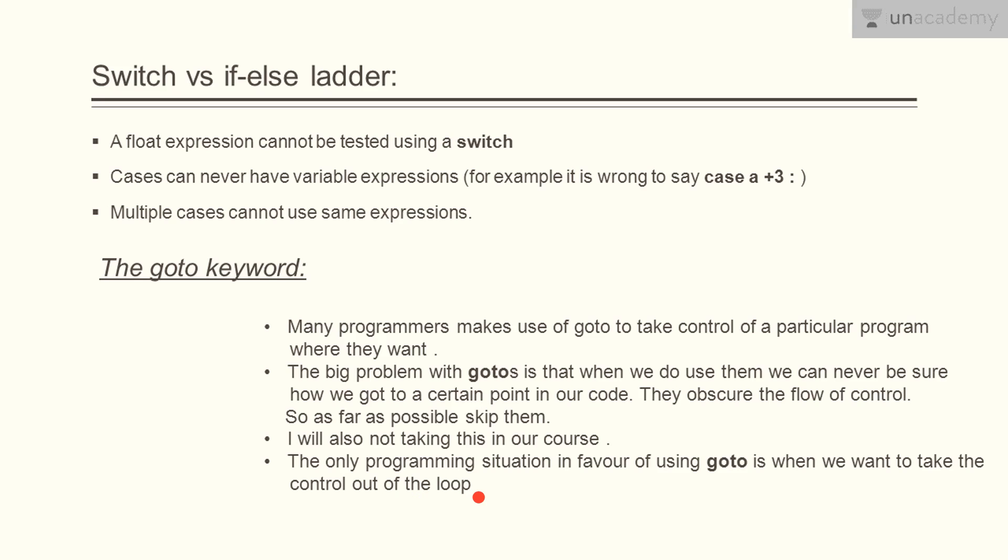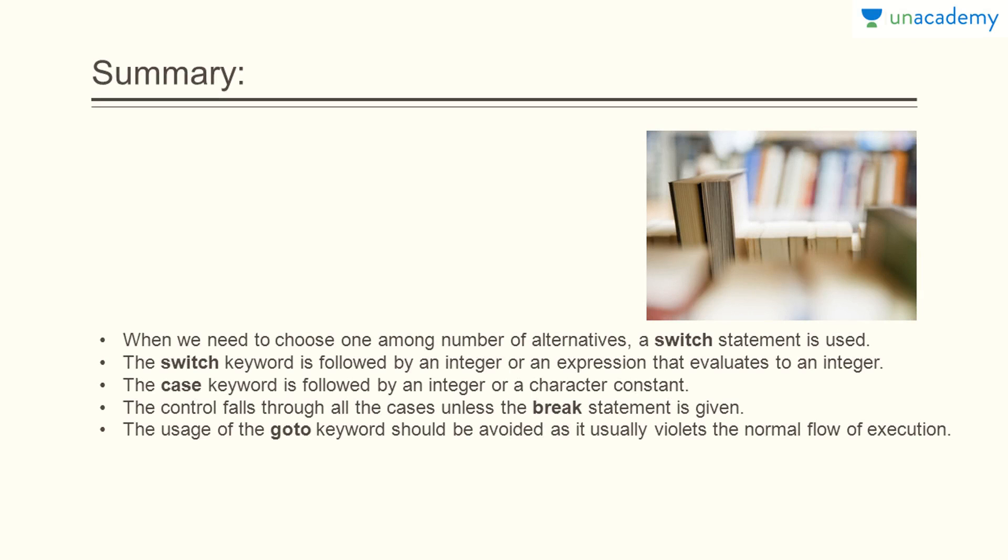Let's start with summary. Let's see what we have learned up until this. What we need to choose one among number of alternatives, a switch statement is used. What we need to choose one among number of alternatives means n number of alternatives is going to be there and we choose among only one. The switch keyword is followed by an integer or an expression that evaluates to an integer. The case keyword is followed by an integer or character constant.